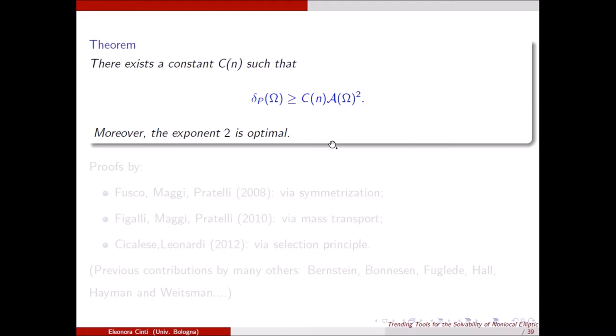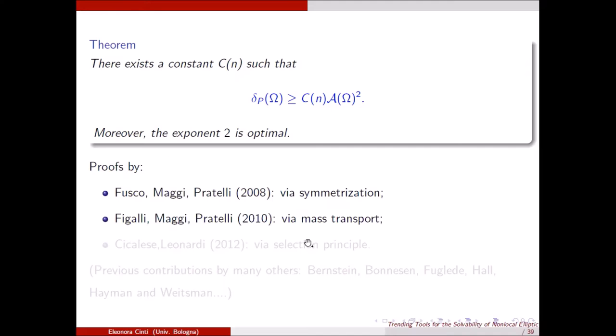The best known optimal result is this lower bound for the deficit: there exists a constant depending on the dimension such that the isoperimetric deficit controls the Fraenkel asymmetry of omega to the power 2, and this power 2 is optimal — you cannot improve this inequality. The first proof of this theorem was due to Fusco, Maggi, and Pratelli in a celebrated paper in Annals of Mathematics, using symmetrization techniques, essentially the same technique used to prove the isoperimetric inequality itself via Schwarz symmetrization.